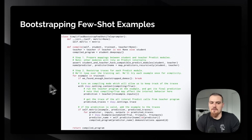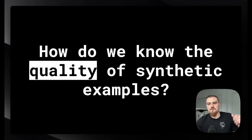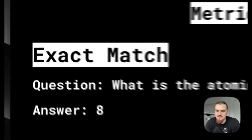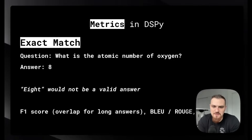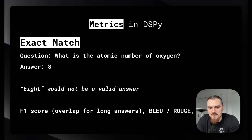That leads to the next question: how do we know the quality of synthetic examples? You're using the LLM to produce synthetic examples, whether for putting in the prompt or for fine-tuning the model — how do you know if that was any good? The answer to that is metrics in DSPY. One metric is exact match: if you have short factoid questions like 'what is the atomic number of oxygen?' and the answer is eight, this works pretty well. But the problem is if you wrote it out instead of writing the number, that exact match would say that's not a good answer. So there are ways around this, like the F1 score — n-gram overlap if you have slightly longer answers.